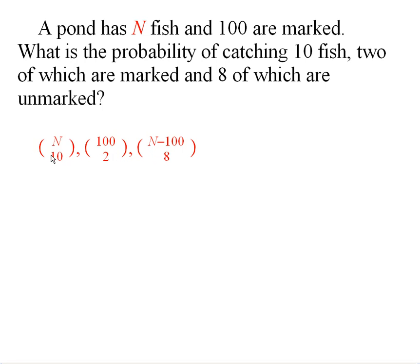And then we would have to divide by the total number of ways of getting 10 fish. So this would be the probability of this particular catch occurring.